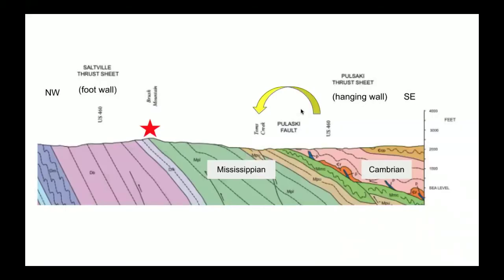The Pulaski thrust belt is the primary fault system in the area. The Pulaski block was thrusted northwest onto the Saltville block, placing the older Cambrian limestones on the newer Mississippian sandstones of Brush Mountain. The stark contrast in rock type has put a unique twist on the mountain's formation. The limestone hanging wall is easily dissolved by rain, forming a low-lying plain, while the footwall's quartz sandstone can withstand much more weathering, leaving the ridge we see today.